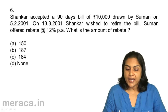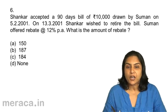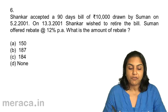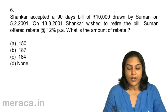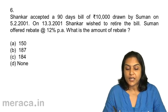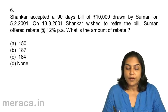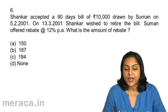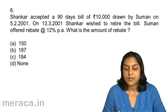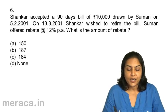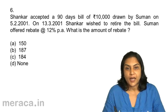Next, question 6: Shankar accepted a 90-day bill of Rs. 10,000 drawn by Suman on 5-2-2001. On 13-3-2001, Shankar wished to retire the bill. Suman offered rebate at the rate of 12% per annum. What is the amount of rebate? a. 150, b. 187, c. 184, d. None.